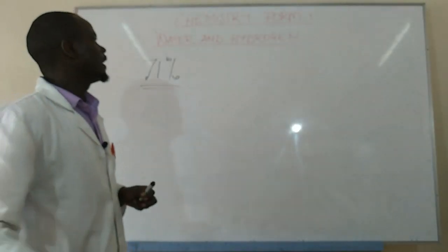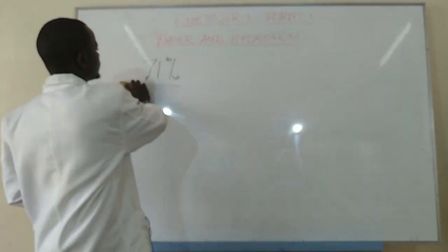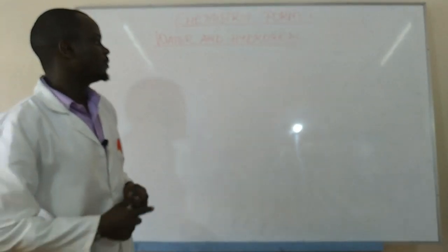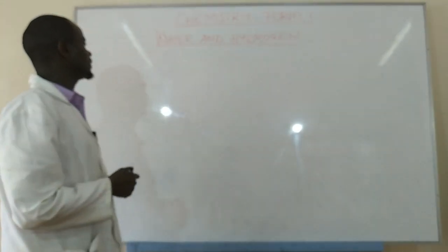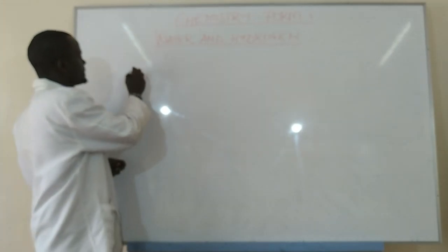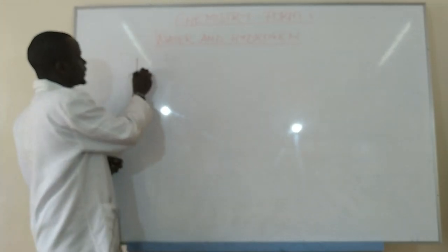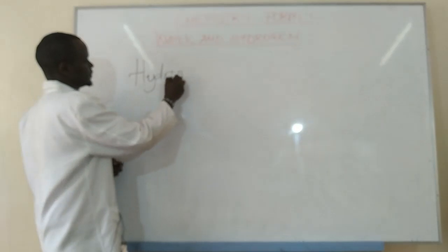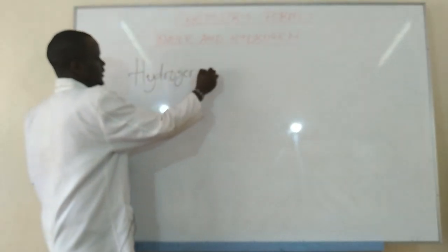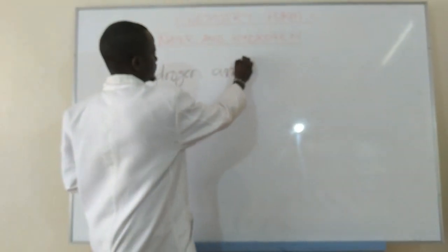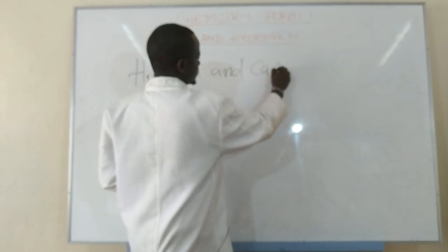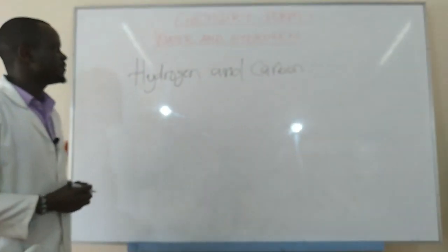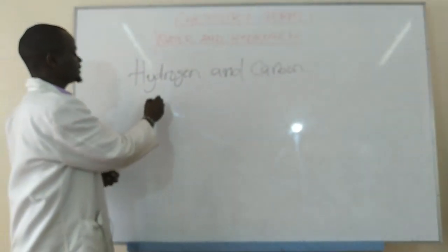In this topic we are going to be looking at the products of burning candle wax in air. Candle wax is basically a compound containing hydrogen and carbon, and therefore candle wax is a hydrocarbon.